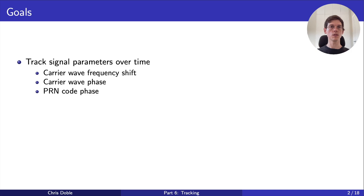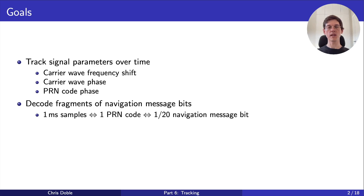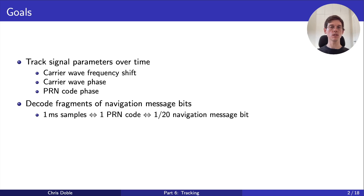The second goal is to decode fragments of navigation message bits. The tracking stage processes one millisecond of samples at a time, which corresponds to one repetition of the PRN code. However, the navigation message is transmitted 20 times slower than the PRN code, so that same millisecond only corresponds to 1/20th of a navigation message bit. These fragments are decoded and forwarded to the next stage, the decoding stage, where they're reassembled into whole bits.